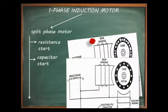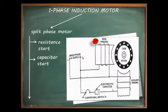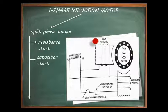The second type of single phase induction motor is the capacitor start single phase induction motor, also called the capacitor start induction run motor. Its construction is similar to the resistance start motor, except that the resistance is replaced by a capacitor. At starting, the phase split between the main winding and auxiliary winding is 90 degrees. Like the resistance start motor, the starting winding is disconnected by a centrifugal switch as the motor picks up speed.